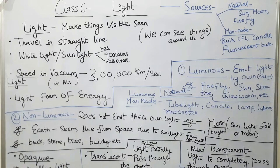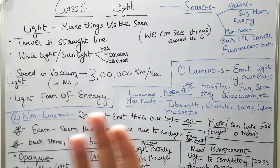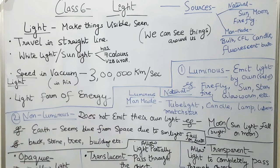There are two types of distinction between light objects. One is luminous, which emits light by itself — examples include natural sources as well as man-made. Natural luminous objects include firefly, sun, star, fire, and glowworm.